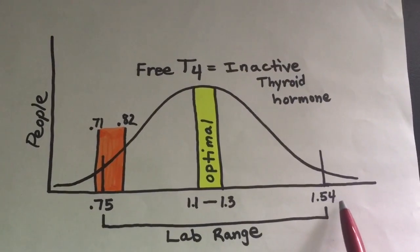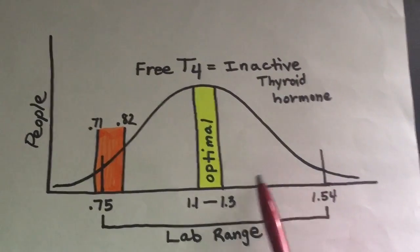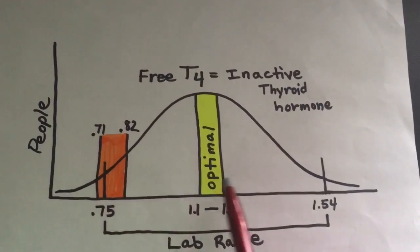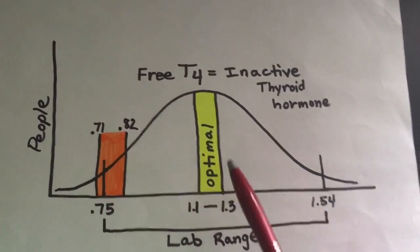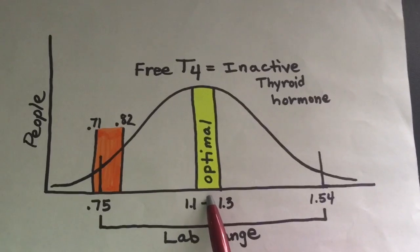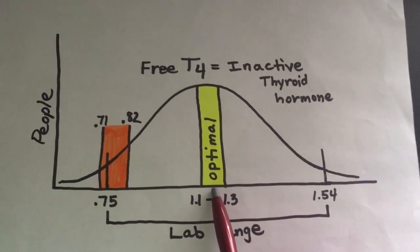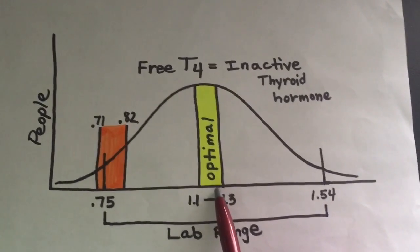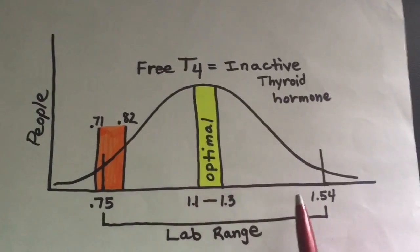The range in between here is considered anywhere in here is considered normal. Except what we want to look at in functional medicine is optimal values of hormones, and they generally lie right in the middle of the range.